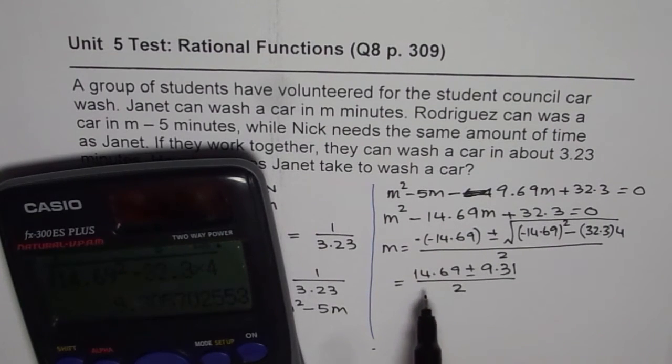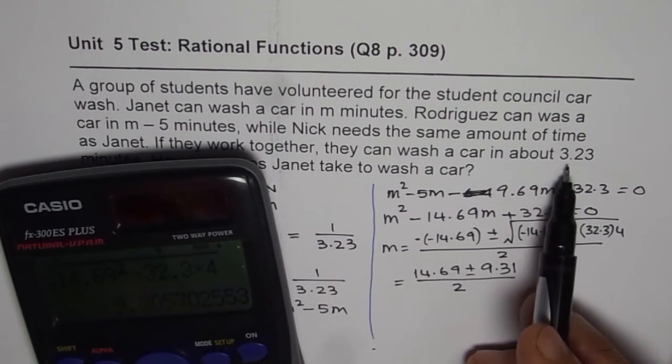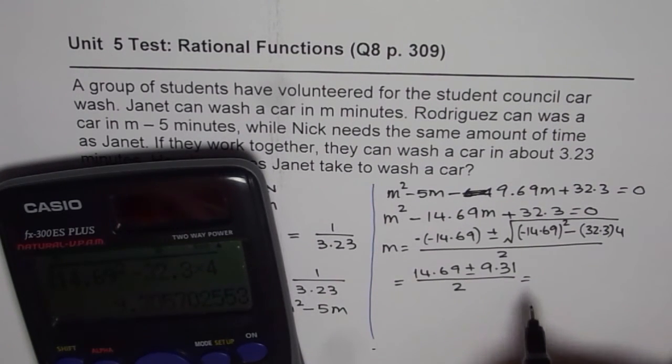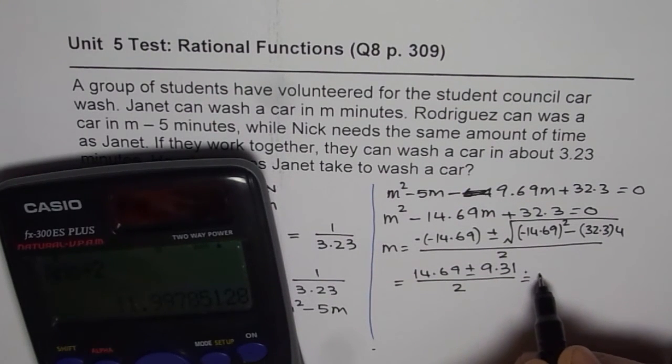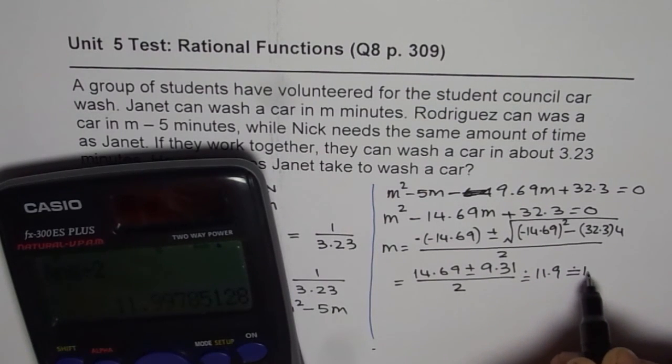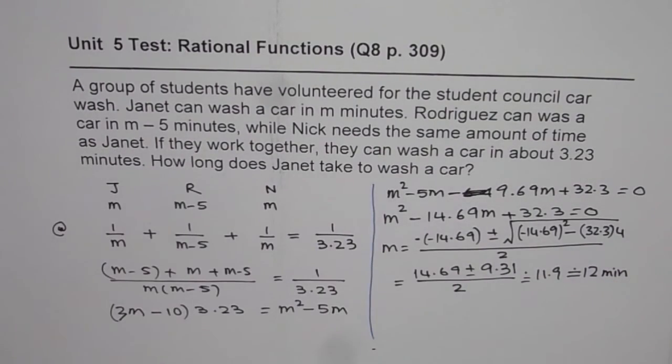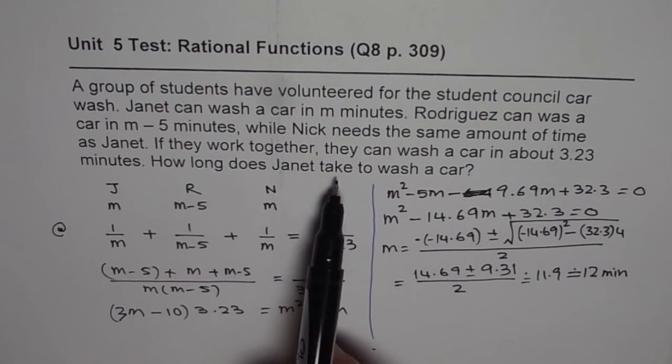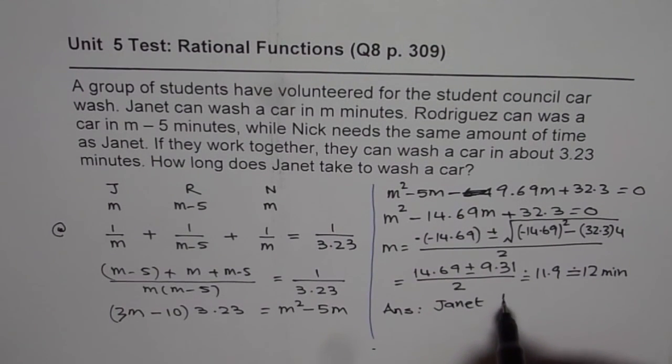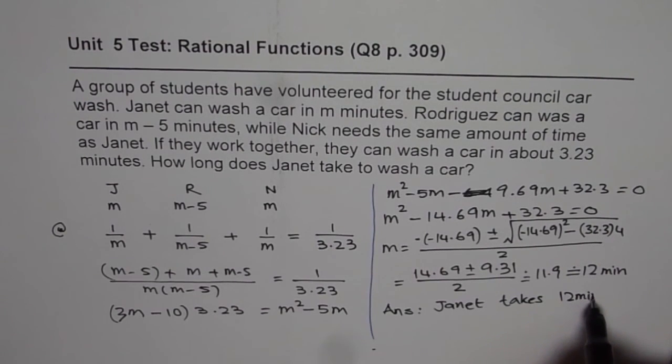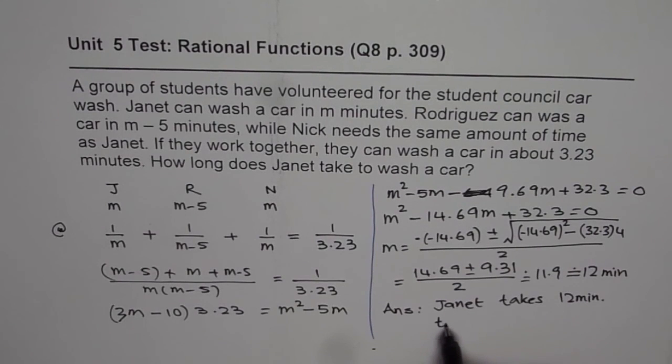So, there are two possible answers. If I take 14.69 minus 9, I will get 5 divided by 2, which is 2 and a half minutes, which is less than 3.23. So, that is not possible. So, we will add them and see what we get. So, let me add 14.69 and 9 and then divide by 2. So, that gives 11.9 approximately, it gives me 12. So, M is 12 minutes for us. So, that means, Janet takes 12 minutes to wash the car. So, our answer is, Janet takes 12 minutes to wash a car alone.